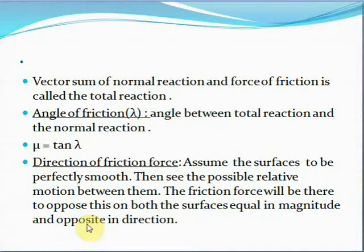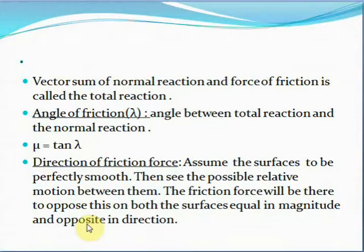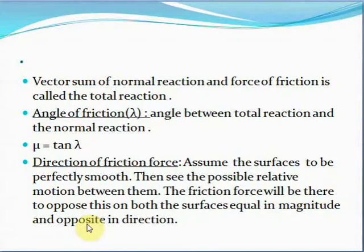To find the direction of friction force acting on a surface in contact with another surface, first assume the surfaces are perfectly smooth — that is, there is no friction between them. Then determine the possible direction of relative motion between them. The direction of friction force will be such that it opposes this relative motion, and this friction force acts on both surfaces: equal in magnitude and opposite in direction.